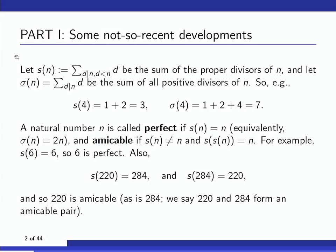As a couple of examples: s of 6 is 6, so 6 is perfect. For an amicable number, the smallest example is 220. So s of 220 is 284, and if you apply s one more time to 284, you get back to 220.